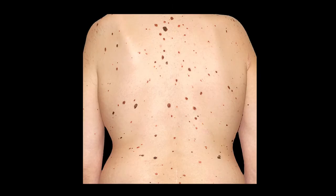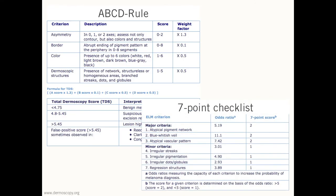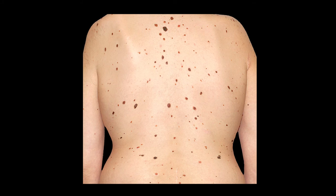In clinical practice, you might have these kinds of patients and have a problem looking at all the lesions. One reason for this problem might be that you have been taught, for example, the ABCD rule or the seven-point checklist in lectures. Even though they are very clever algorithms and perform very well in clinical studies, they do have a problem in clinical practice.